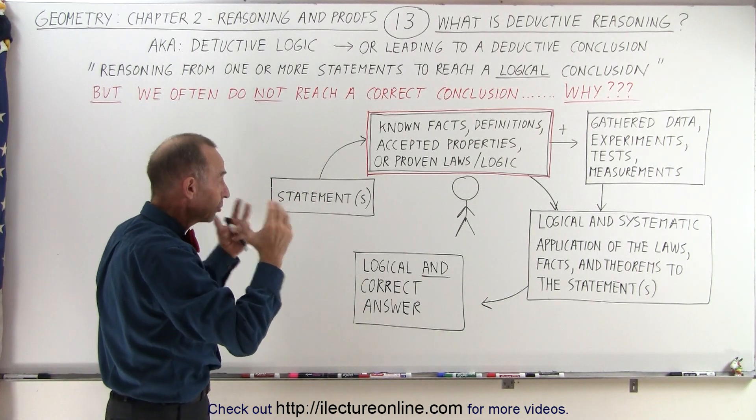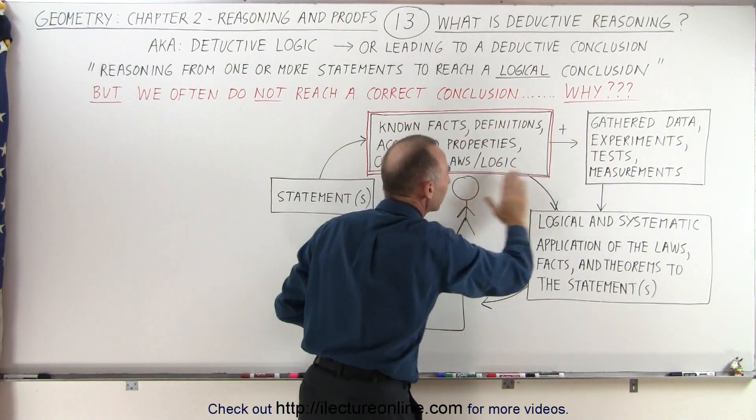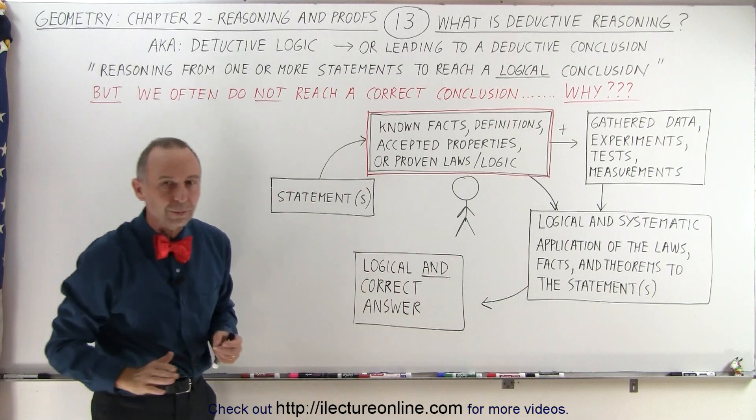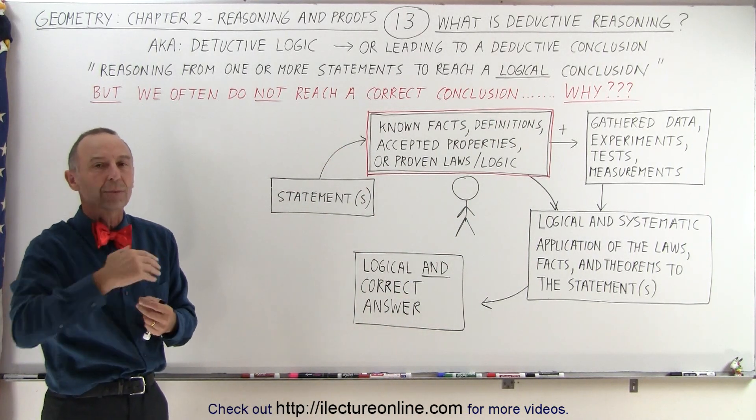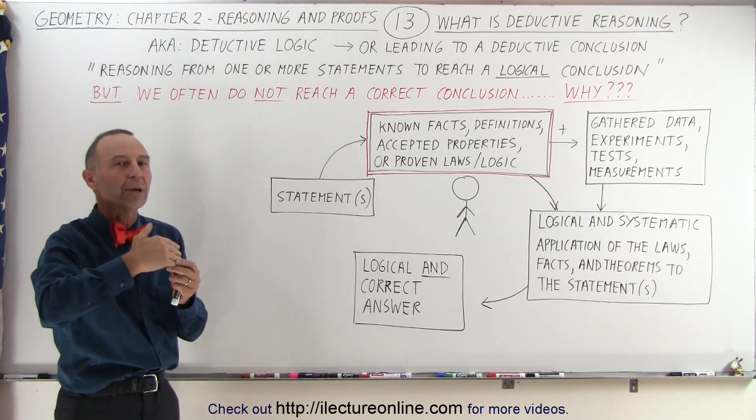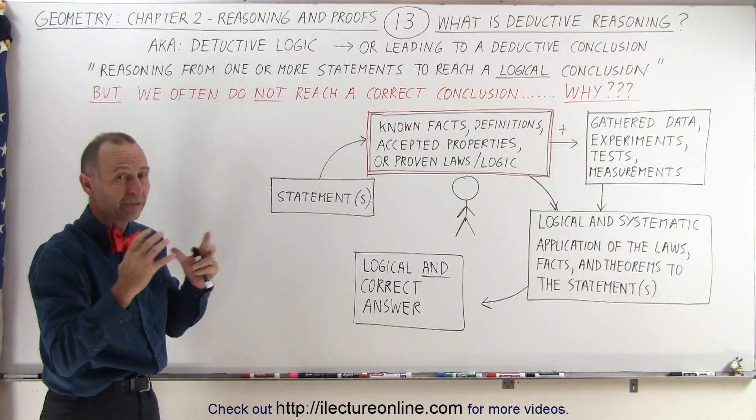Quite often, we do what we call deductive reasoning by skipping over this step, not knowing the rules, laws, theorems, and proven facts that will support our deductive reasoning. We simply skip over that and it becomes more opinion than based upon fact. And that's where the big difference comes in.